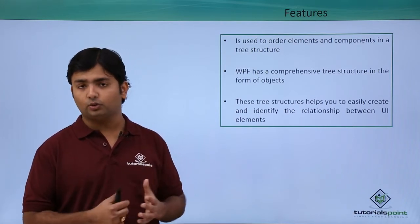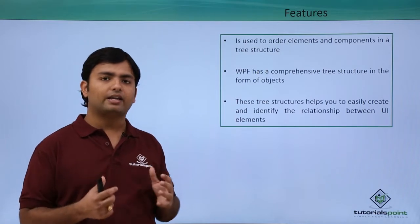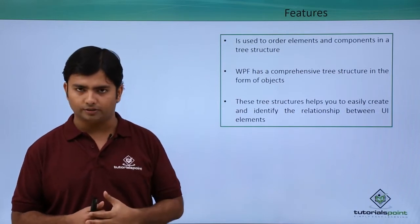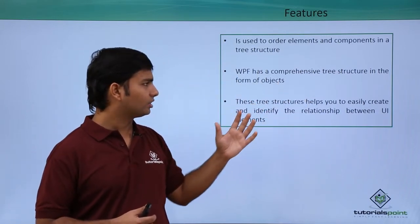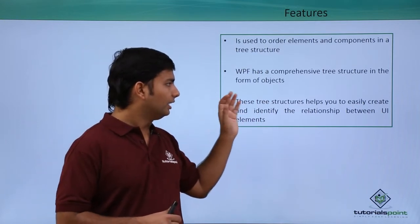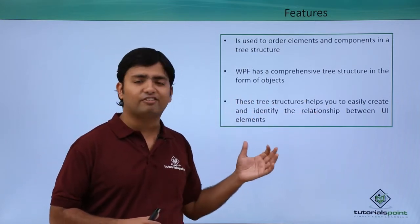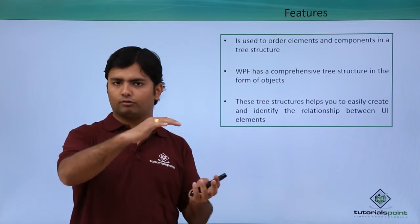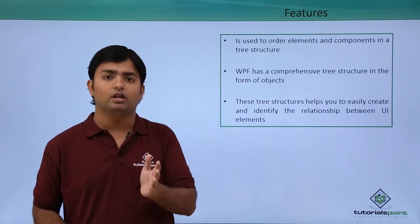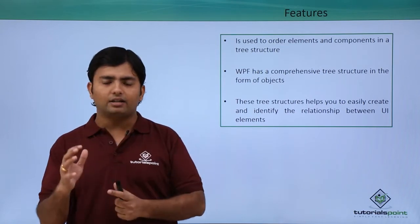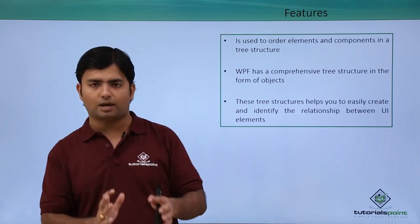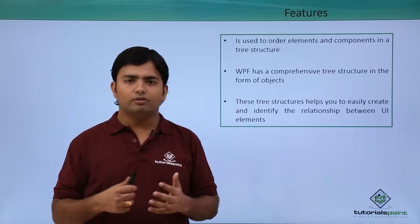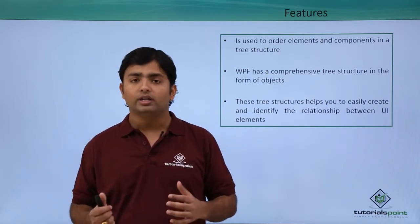The Elements Tree is used to create a hierarchical tree structure and to order the elements and components in that structure. It has a comprehensive tree structure in the form of objects, and most importantly it helps you create and identify the relationship between UI elements. So when you put a Grid under Window, it shows a level of hierarchy and a relation between the Grid and the Window. Inside the Grid you might put a StackPanel, and inside that a Button — this all shows the relationship.